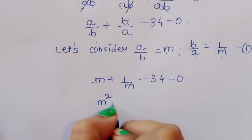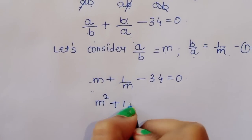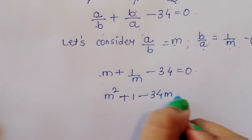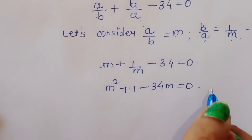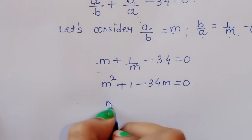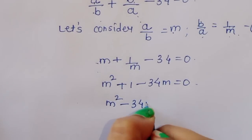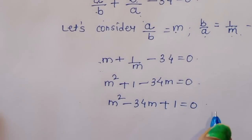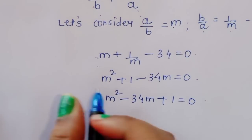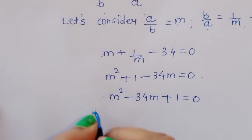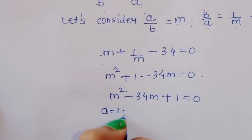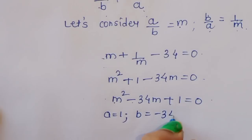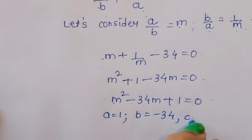When we simplify this equation, multiplying through by m, we get m squared plus 1 minus 34m is equal to 0, so we can write: m squared minus 34m plus 1 is equal to 0. The coefficients are: a equals 1, b equals minus 34, and c equals 1.